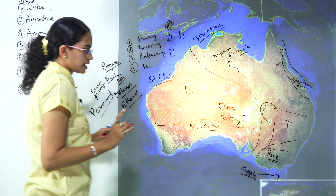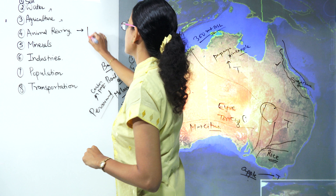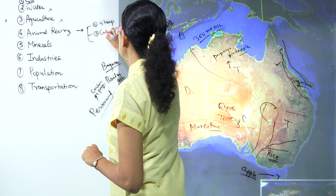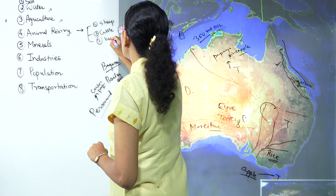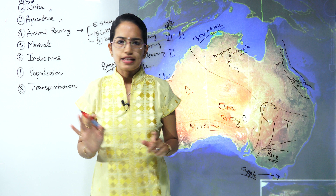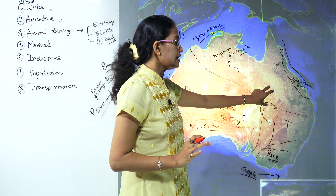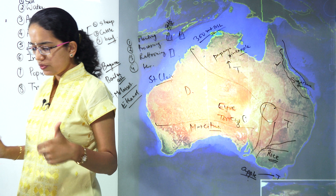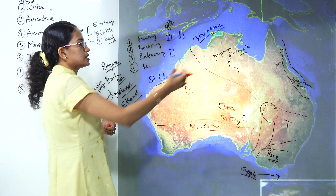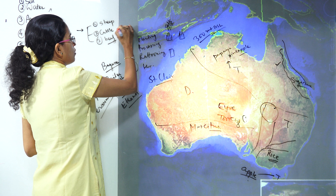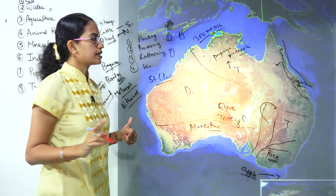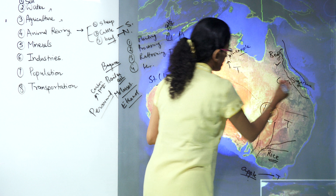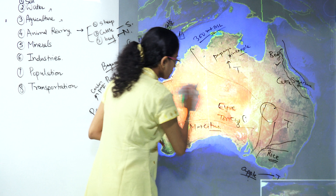Coming on to the next topic - animal rearing. Under animal rearing we classify this into three categories: sheep, cattle and beef. Very interesting to note the difference between cattle and beef. Cattle is found mainly in the regions of Queensland, and beef again in the regions of Queensland. However beef is in northern Queensland, while cattle is found mainly in southern Queensland. So within Queensland: north you would have beef, south you would have cattle.